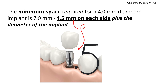So together they make up the number 1.5. To remember how much space we need on each side of the implant: the implant looks like the number one, then we have the decimal point, and then the adjacent tooth with the opposing tooth make up the number five.